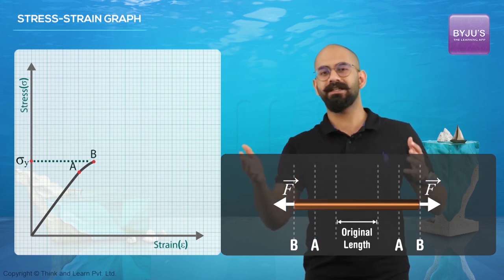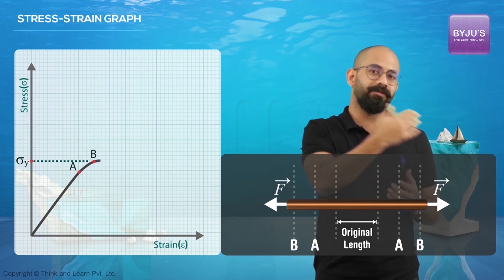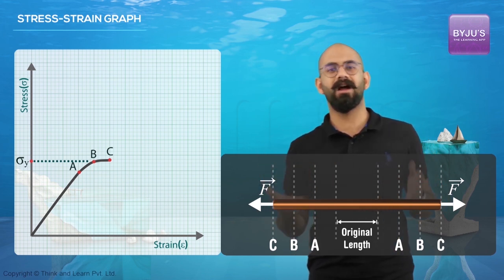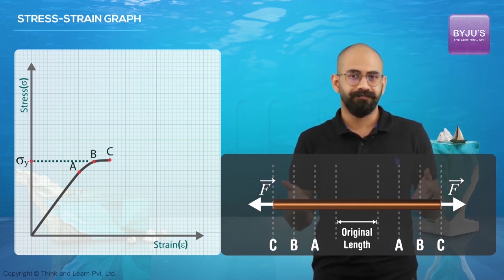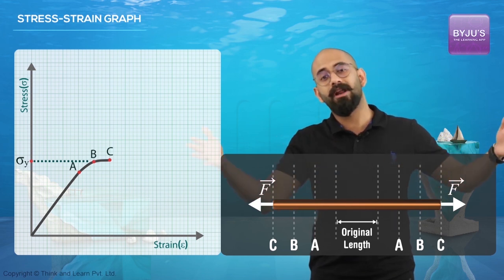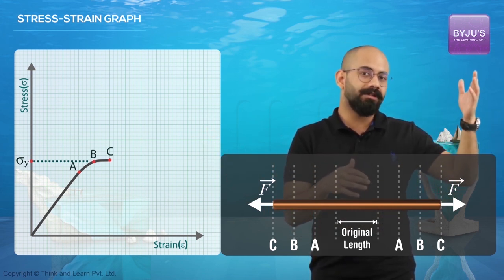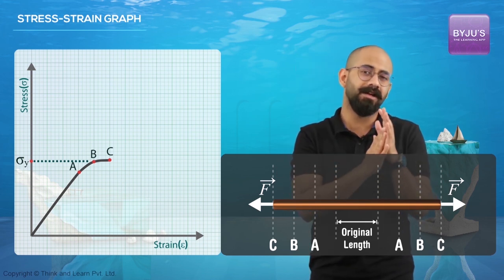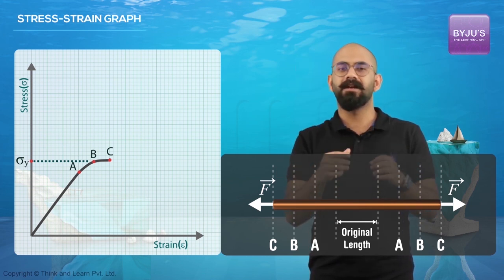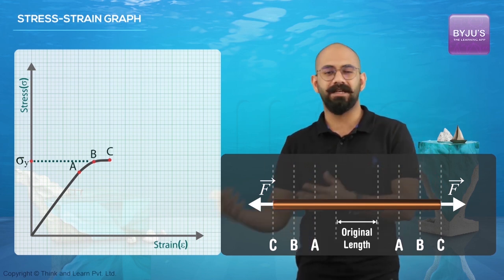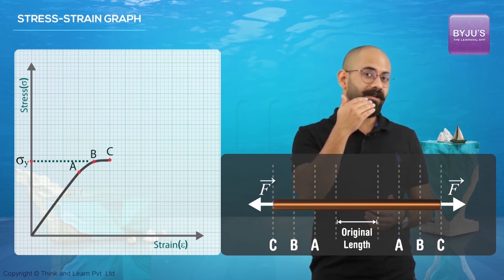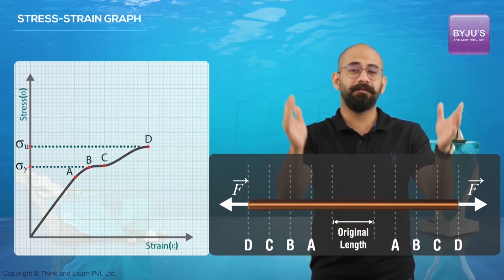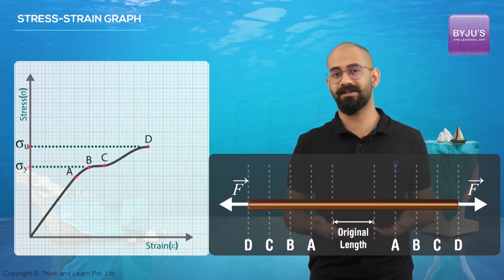From B to C, even a small increase in stress produces a very large increase in strain — a small force causes a large elongation. From C onwards, the slope increases; the elongation is not as large as in the B-to-C region. From C we reach point D, which is the maximum stress this wire can withstand.